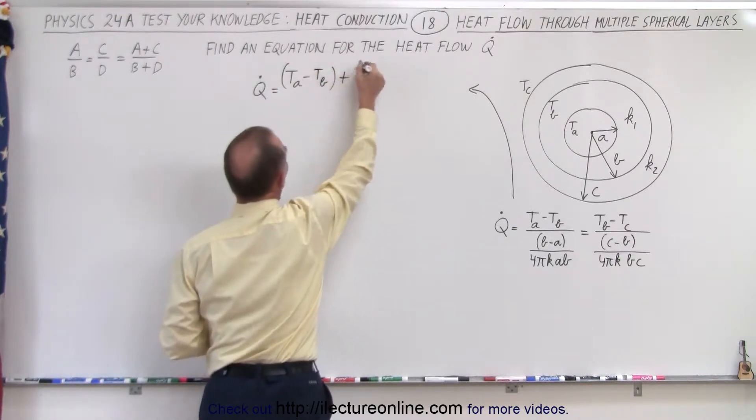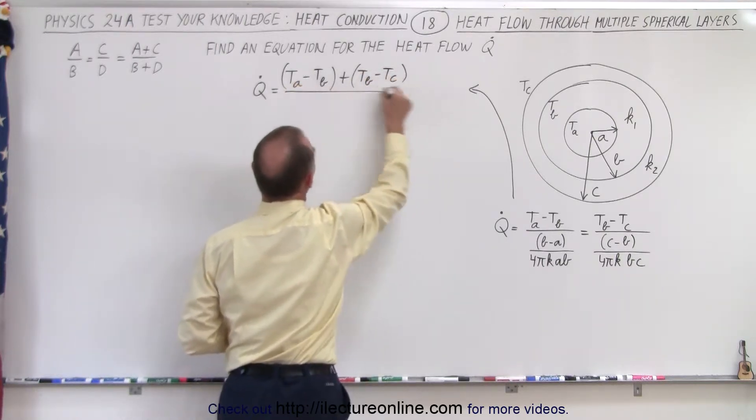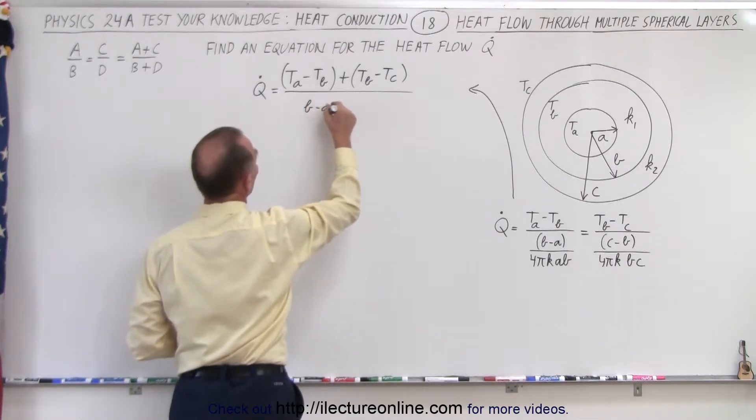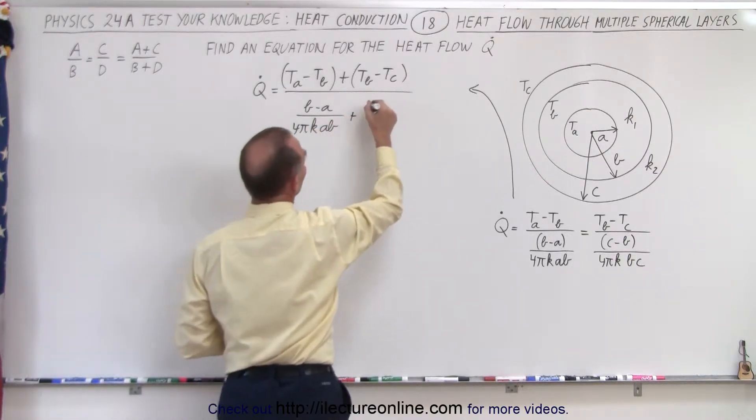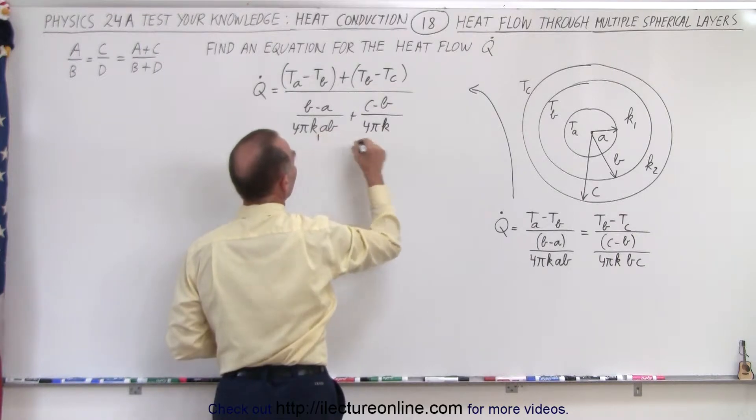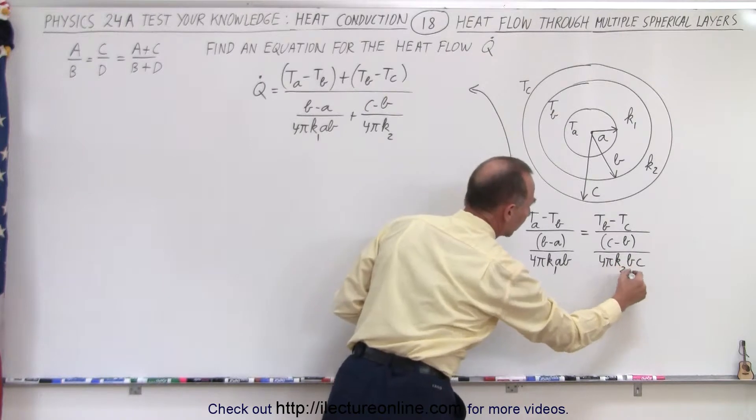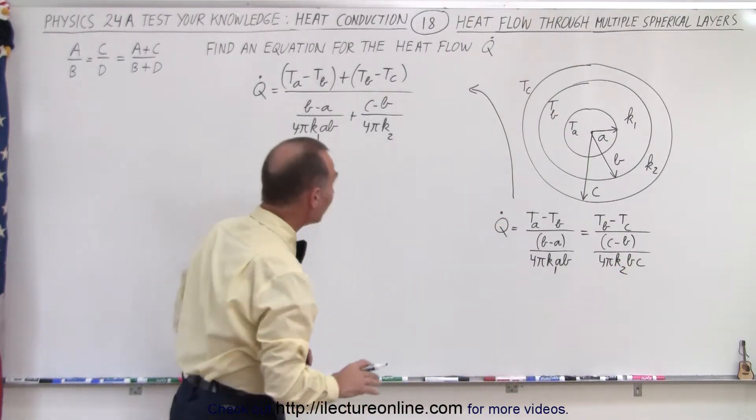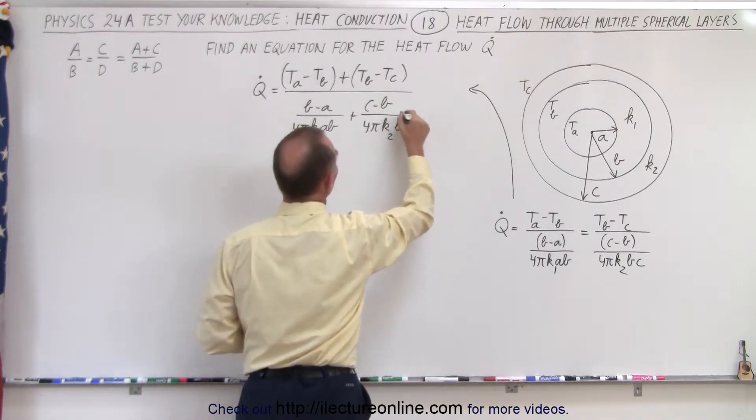And then add to that TB minus TC all divided by the sum of the denominators, which is B minus A over 4πK_AB plus C minus B divided by, that would be 4πK. And of course, this would be K1 and K2 because those are the two different layers. So maybe we'll call this K1 and K2 because they're not the same K. And that's B here. And that would be B times C right there.